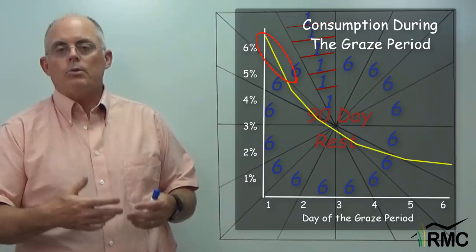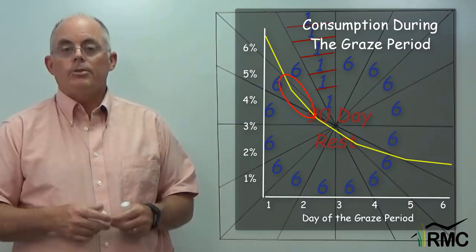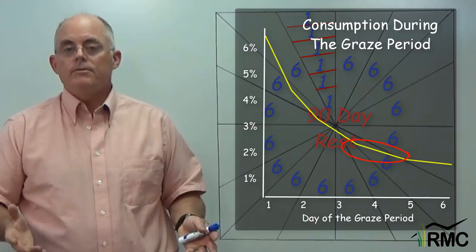By the second day, maybe they're eating 4%. Third day, maybe 3%. By the fourth day, they're probably eating 2%, maybe even a little less. And the cows want to move. They like being fat.